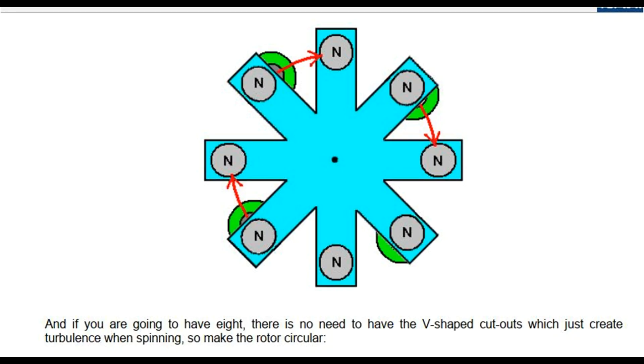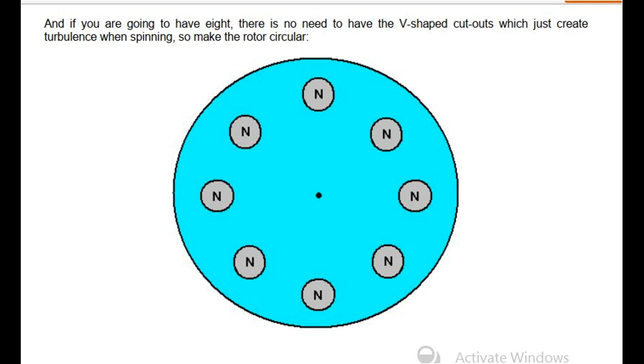Or better still, eight. And if you are going to have eight, there is no need to have the V-shaped cutouts which just create turbulence when spinning, so make the rotor circular. And the stator supporting the coils matches the rotor.